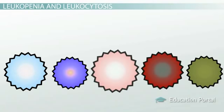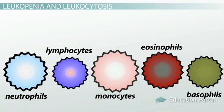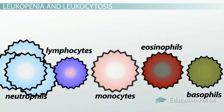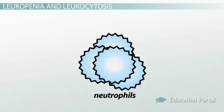The white blood cell count is made up of the total count of many different white blood cells, including neutrophils, lymphocytes, monocytes, eosinophils, and basophils. The majority of the count is made up of neutrophils, and that is what we'll focus on the most right now.